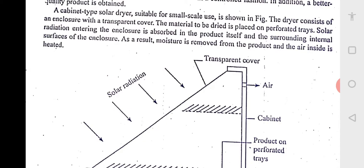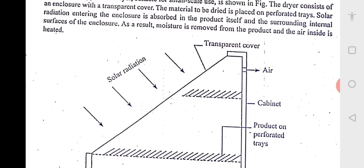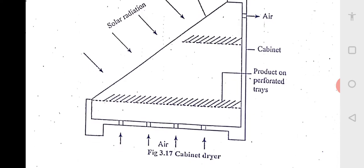Solar radiation entering the enclosure is absorbed in the product itself and the surrounding internal surfaces of the enclosure. As a result, moisture is removed from the product and the air inside is heated.